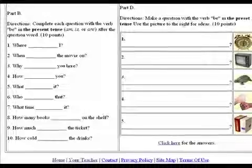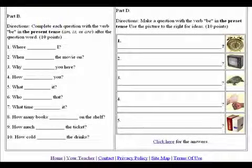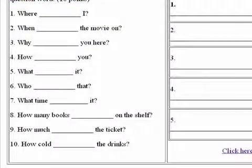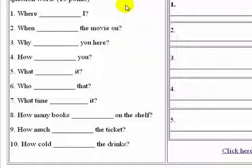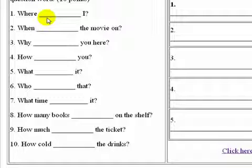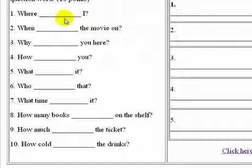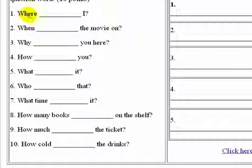Here we have more. This one asks you to complete each question with the verb be in the present tense, and these are questions with an auxiliary verb. The first one is: where am I? When you have where, when, why, or how beginning a question, it follows the same form as where am I. So fill those in.